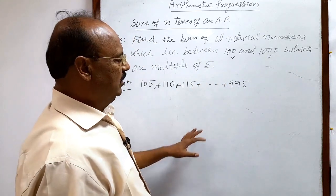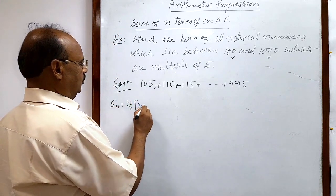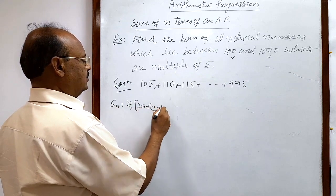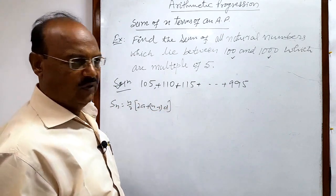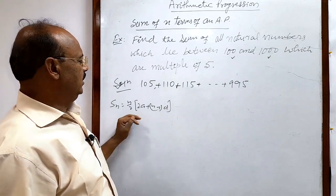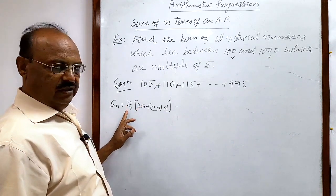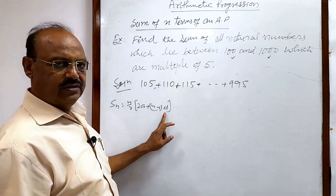So here we will use the formula Sn is equal to n/2 times [2a plus (n minus 1) times d]. We can use this formula here for sum of n terms of an arithmetic progression. So here we need value of n, value of first term a, and value of common difference d.